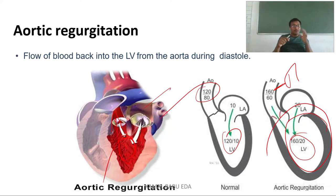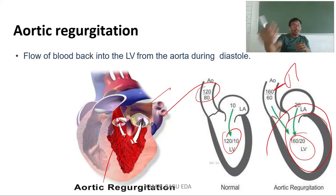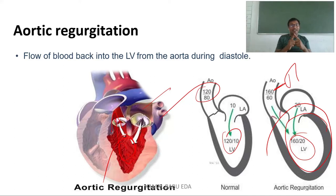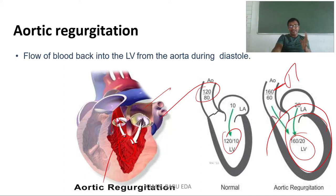In summary, blood that enters the arch of aorta should not come back. Due to the disease condition and valvular damage, a pressure gradient occurs and blood re-enters the ventricle — this is called aortic regurgitation.